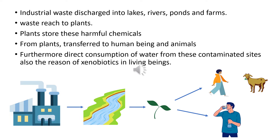From there, these chemicals reach plants grown nearby farms and fields. Plants store these harmful chemicals. When human beings and animals consume these crops or plants, these chemicals reach into their body. Furthermore, direct consumption of water from these contaminated sites is also a reason for xenobiotics in living beings.